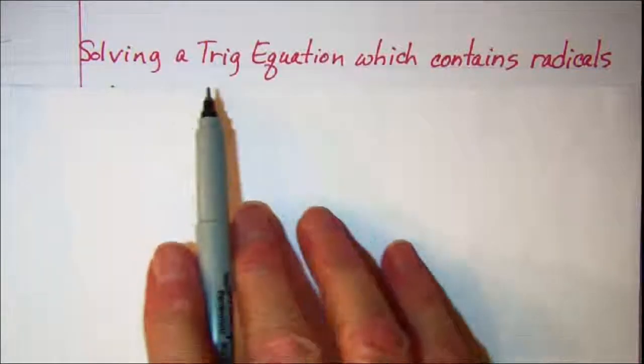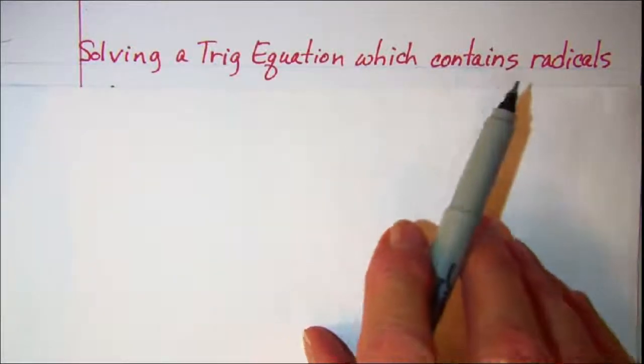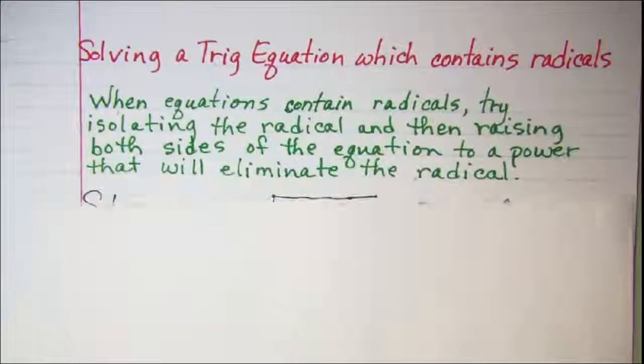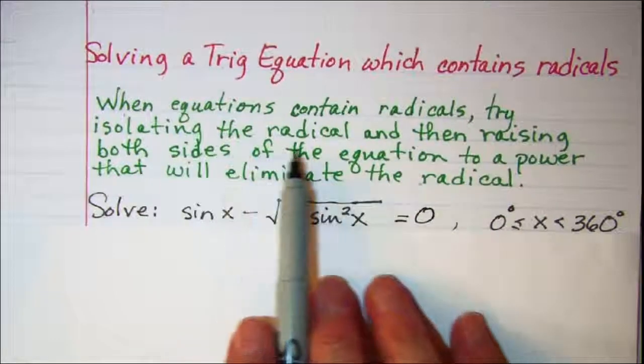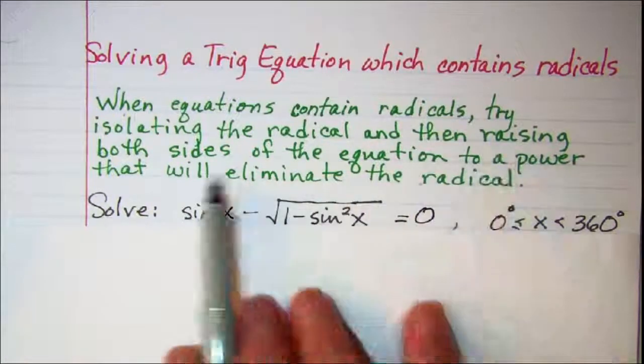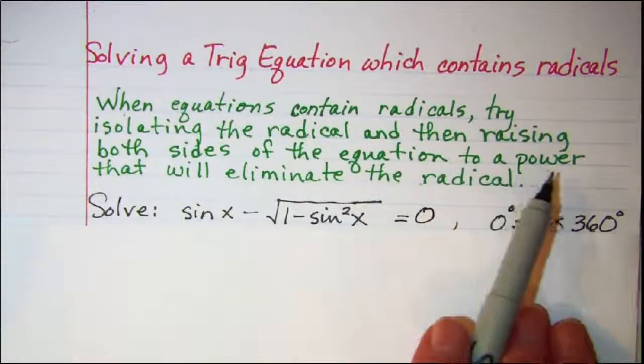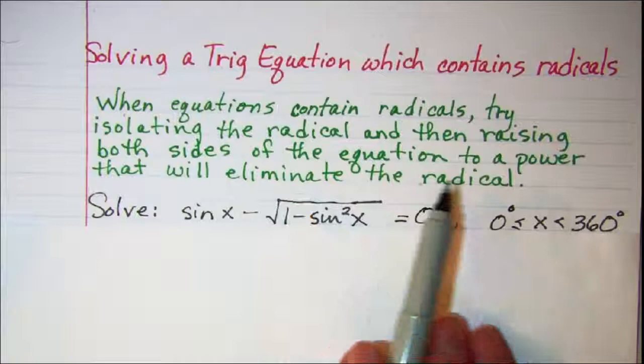In this video we'll be solving a trig equation which contains a radical. When equations contain radicals, try isolating the radical and then raising both sides of the equation to a power that will eliminate the radical.